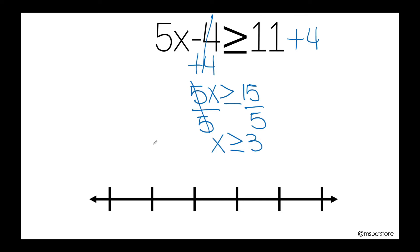So now I'm ready to graph my solution. This is going to be negative 2, negative 1, 0, 1, 2, and 3.